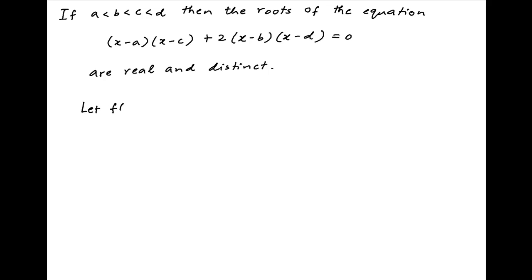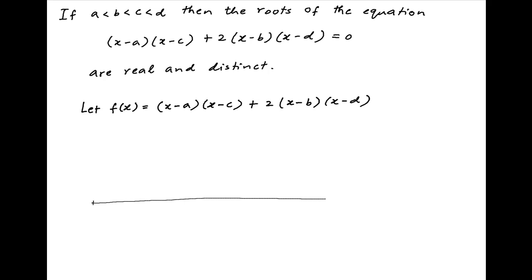Let's define the function f(x) equal to (x minus a)(x minus c) plus 2 times (x minus b) times (x minus d). Now let's determine the value of the function along the number line. We are given that a is less than b is less than c is less than d.